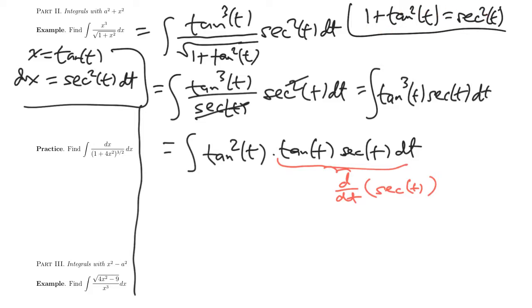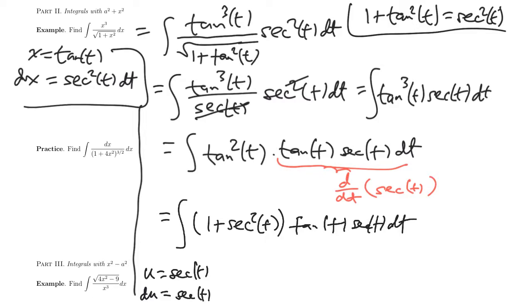So ultimately, I'll have this first part in terms of secant. And then I'll have tangent t secant t dt. So under the substitution, u equals secant t du equals secant t tangent t dt.